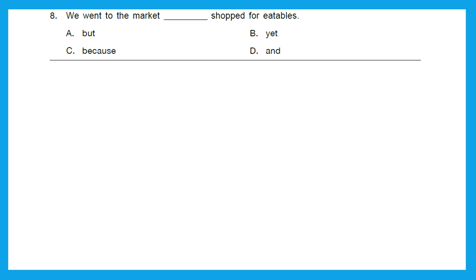Question 8: 'We went to the market dash shopped for eatables.' Options are: but shopped for eatables, yet, because, or and. Here two sentences are being joined, so we will use the conjunction 'and' to link them into a single sentence: 'We went to the market and shopped for eatables.' The right option is option D.